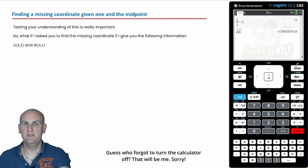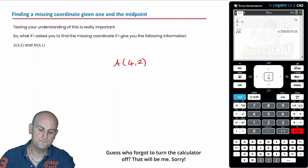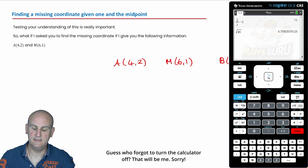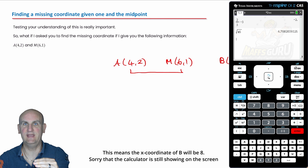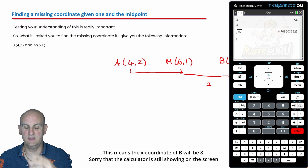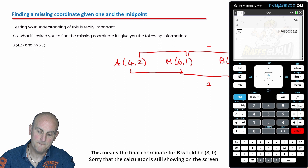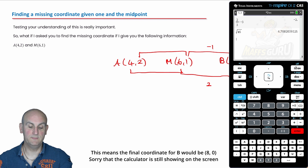Now: find the missing coordinate given one endpoint and the midpoint. I've got point A at (4, 2) and a midpoint of (6, 1), and I want to find point B. From A to the midpoint I've gone 2 across in x, so I go another 2 to get x = 8. From y = 2 to midpoint y = 1 I've subtracted 1, so subtracting another 1 gives y = 0. So B is (8, 0).